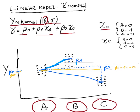We create a dummy variable called xb in which, when the group is A, we assign the value 0; when the group is B, we assign the value 1; and when the group is C, we assign the value 0. Then we create a second dummy variable xc in which we assign 0 to A, 0 to B, and 1 to C. That's basically the trick we need to do to use a linear model for this case.